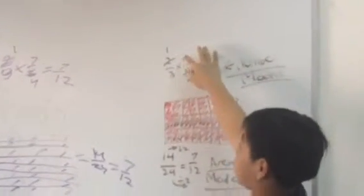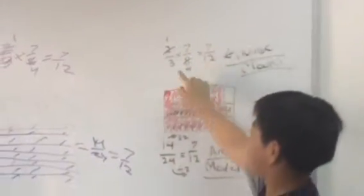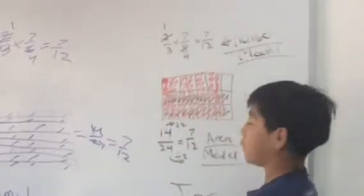8 divided by 2 equals 4, and 2 divided by 2 equals 1. So 1 times 7 equals 7, and 3 times 4 equals 12. So the answer is 7/12.